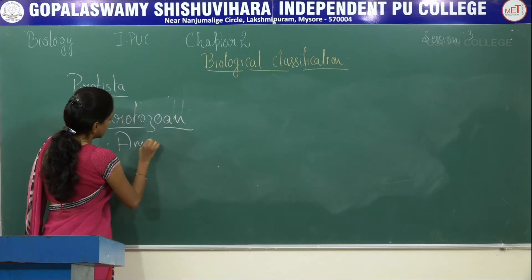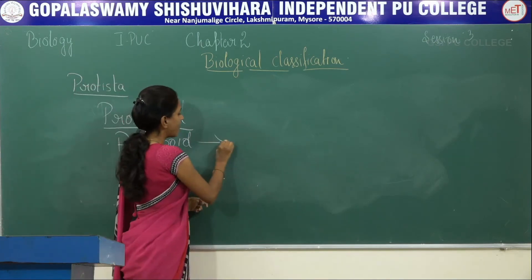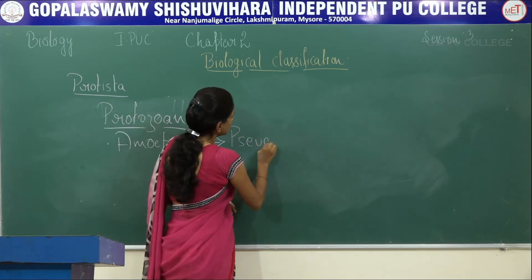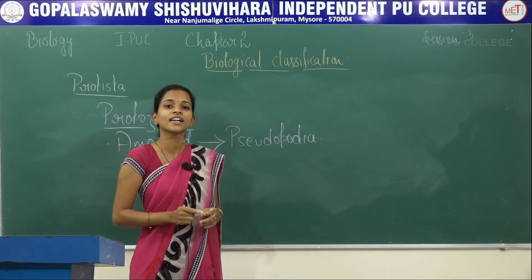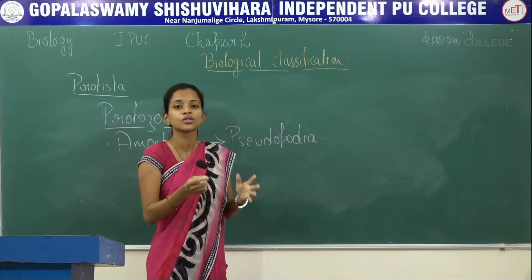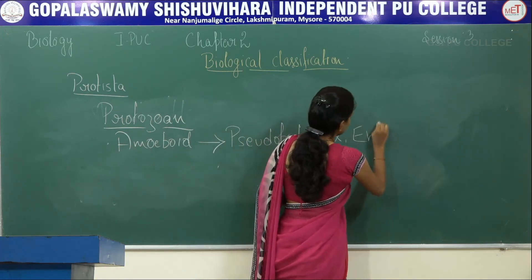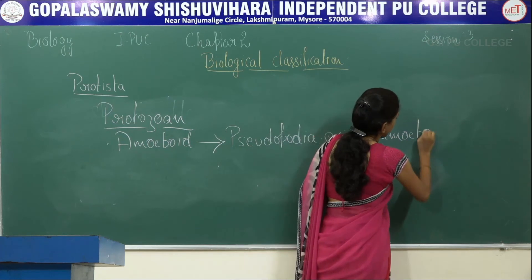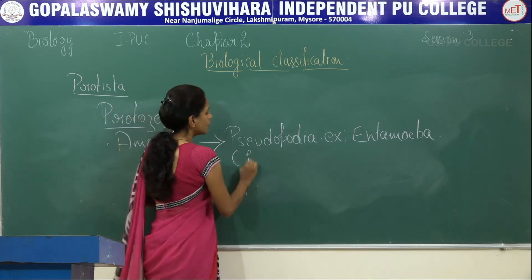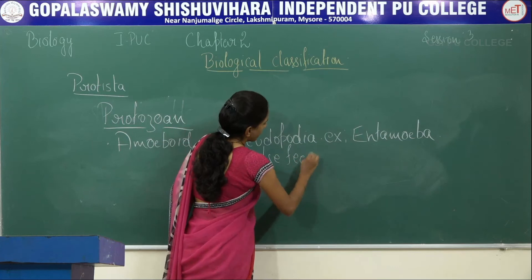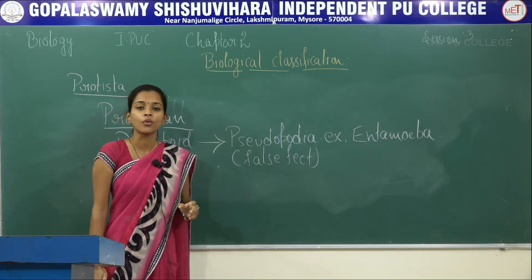First is amoeboids. Amoeboids have a locomotory organ called pseudopodia — small finger-like projections which keep moving, allowing the organism to move forward. These pseudopodia can also be termed false feet. An example is Entamoeba. Some marine amoeboid organisms have silica as their outer protective covering.